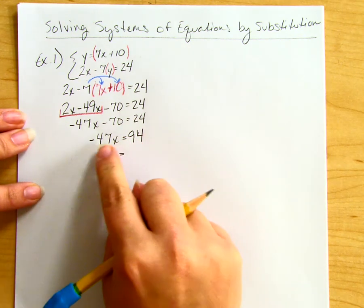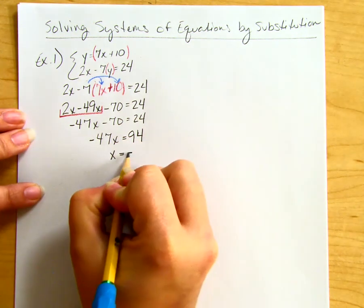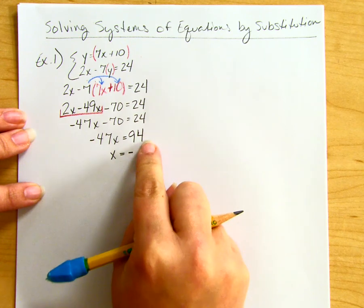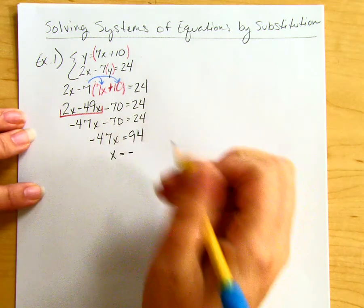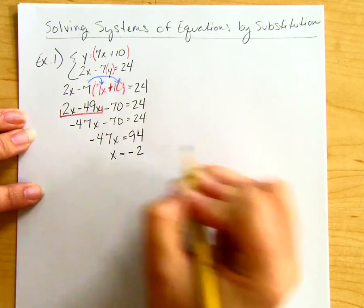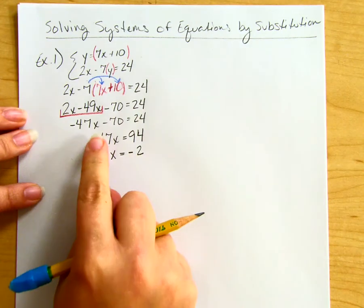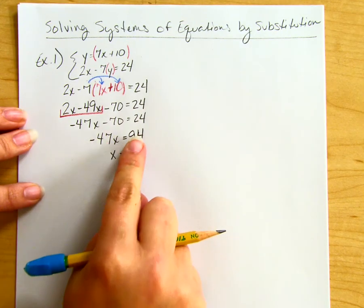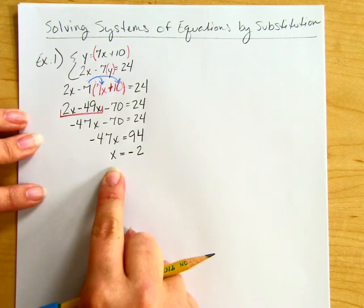On the right, 94 divided by -47 is -2, because 47 times 2 equals 94. So I found my x value: x = -2.